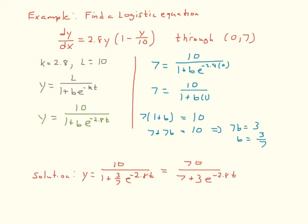To eliminate the fraction, multiply numerator and denominator by 7: 7 × 10 = 70, and 7 × (1 + (3/7)e^(−2.8t)) = 7 + 3e^(−2.8t). So the logistic equation is y equals 70 over (7 + 3·e^(−2.8t)). That is the solution to this particular differential equation.